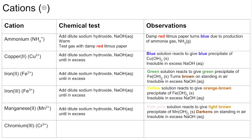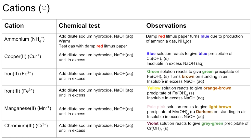Finally, chromium three plus uses the same test. We have a violet solution that reacts to give a grey-green precipitate of chromium three hydroxide. But this time there is a change when excess sodium hydroxide is added — we get a dark green solution.